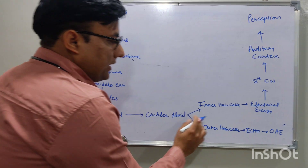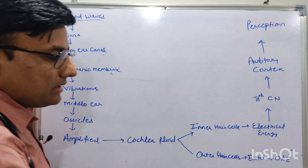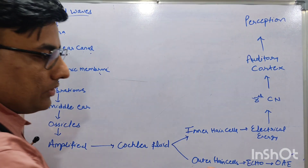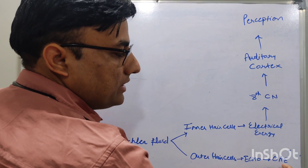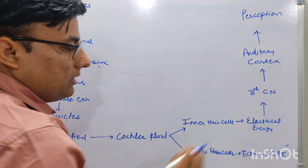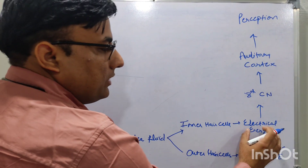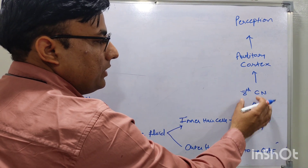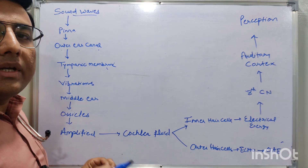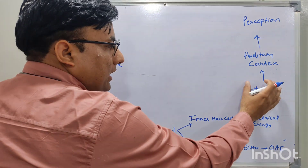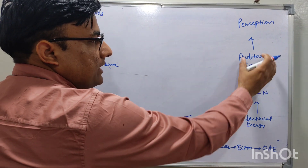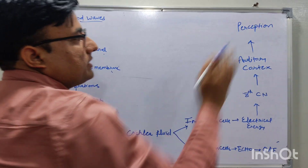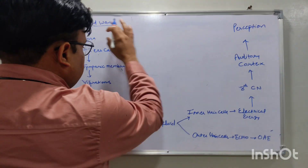In the cochlea, there are two types of hair cells: inner hair cells and outer hair cells. Outer hair cells produce echo sounds called otoacoustic emissions. Inner hair cells convert mechanical energy to electrical energy, which is transferred by the cochlear branch of the eighth cranial nerve to the brainstem and auditory cortex, where sound is perceived.